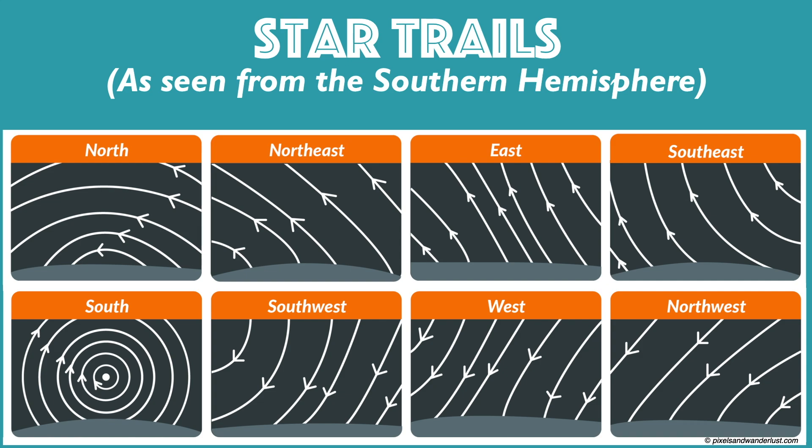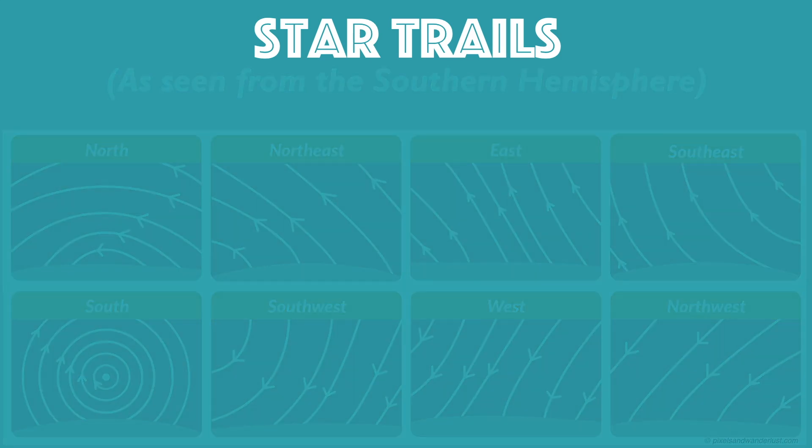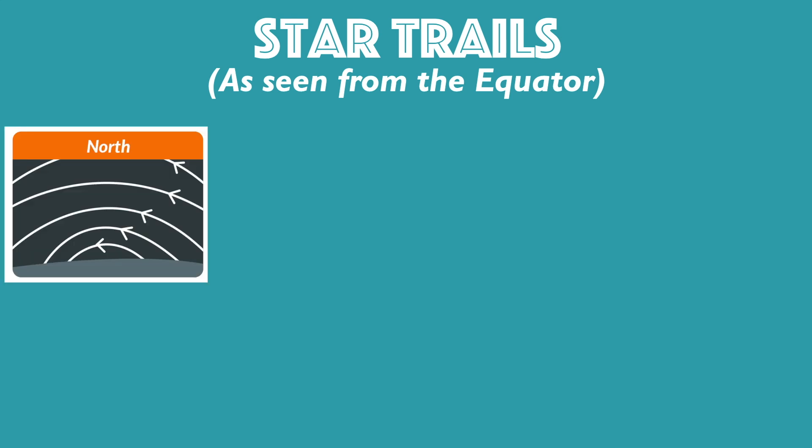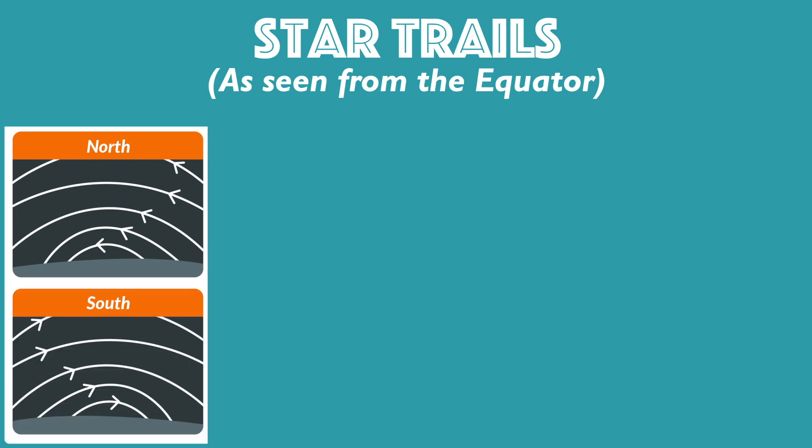And last but not least, the most interesting place to stargaze and follow star trails — the equator. Towards the north, the circumpolar stars appear to travel counterclockwise around the north celestial pole, which in this case sits just on the horizon. And similarly, the circumpolar stars around the south celestial pole, which also sits on the horizon when looking towards the south, can be seen to draw out clockwise star trails.